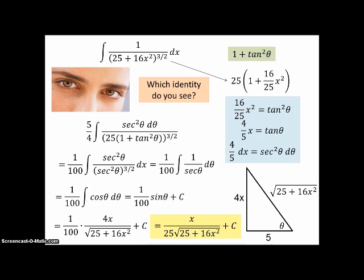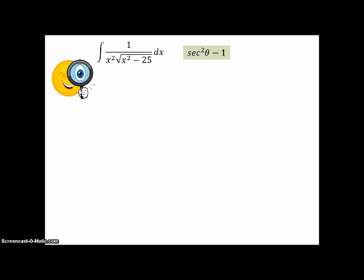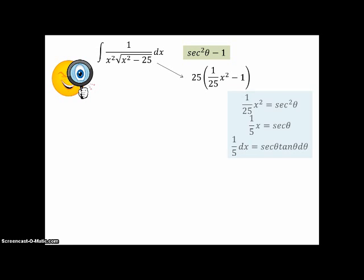That one got a little messy, but still not too bad. Let's take a look at another example. What do you see this time? It's a quantity squared minus something. So we're going to use sec²θ minus 1. And we got to fix the 1 first. So we factor the 25 out. And so sec²θ has to equal 1/25 x². Take the square root, positive square root of both sides. And don't worry about plus or minus. It actually works out because if x is negative, then secant will be negative. If x is positive, secant will be positive, and so on.